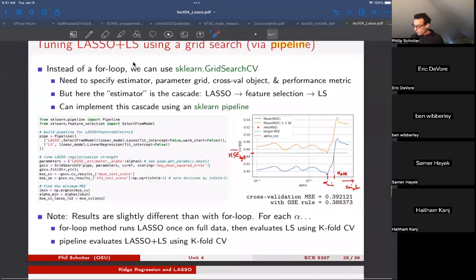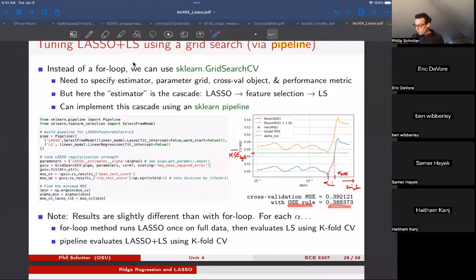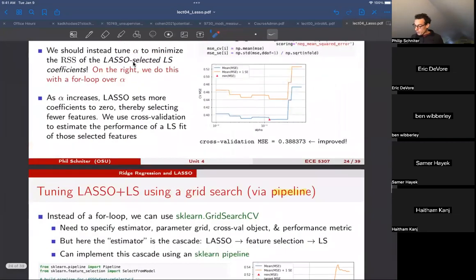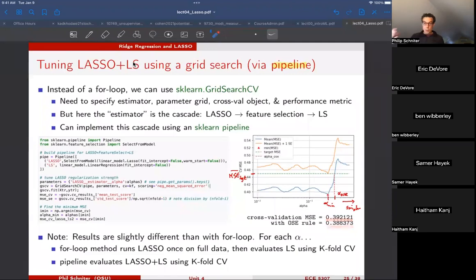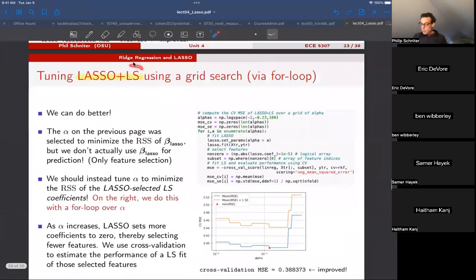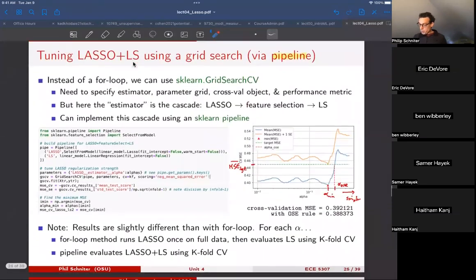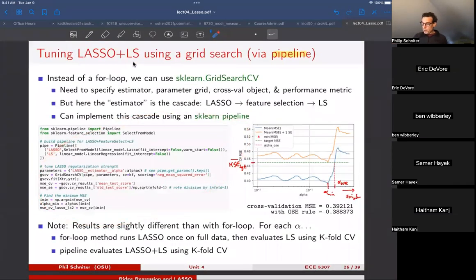Finally, this one standard error rule would be the value you'd get if you want to use that method. And interestingly enough, when you look at the final results, this one standard error rule gives you the same value as this. But if you didn't use one standard error rule, it would be worse. So there was actually a real benefit to doing the one standard error rule in this case. So to summarize, we have two different ways to do LASSO and least squares together. The first way is kind of a cheating way because in that stage we're using the full data and doing cross-validation later. Whereas this is a more robust way where we use a pipeline to do cross-validation for the LASSO plus least squares altogether.